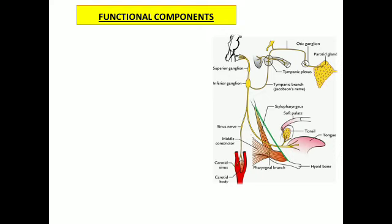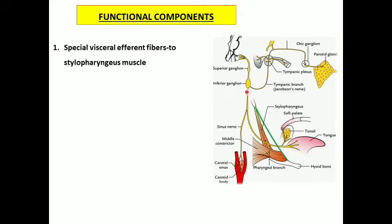Now let us analyze the various functional components of the glossopharyngeal nerve. The first component is special visceral efferent fibers. As the name suggests, these are efferent fibers coming from the nucleus ambiguus, and these fibers are motor to the muscle called the stylopharyngeous muscle.